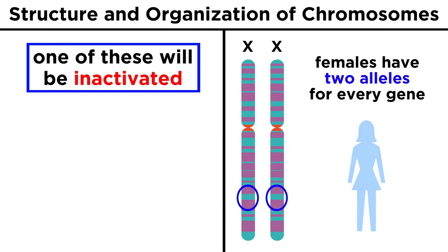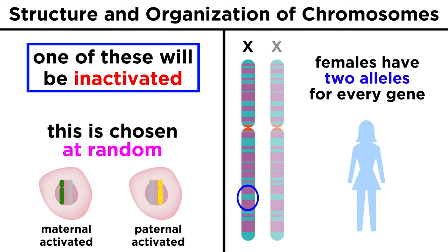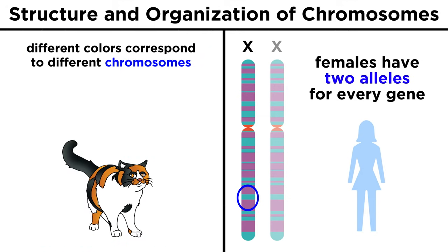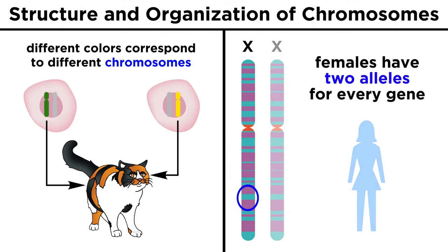We should also note that females with two X chromosomes typically have one of these largely inactivated in each cell, and the inactive one is chosen at random, so some cells have an active X chromosome that came from the mother, and some from the father. This results in phenotypes like two colors of fur on female cats, because some cells have an X chromosome active with an allele for one color of fur, and other cells have the other X chromosome active with the other allele, corresponding to a different color.